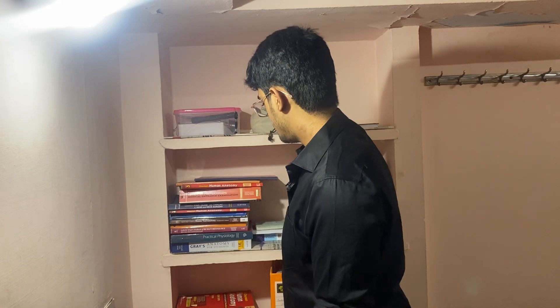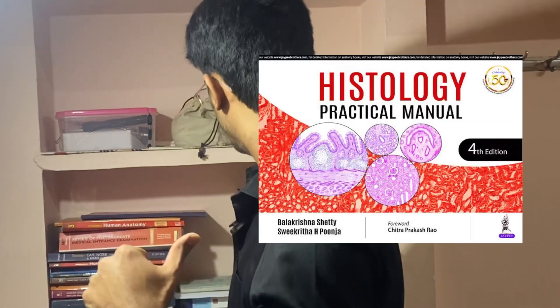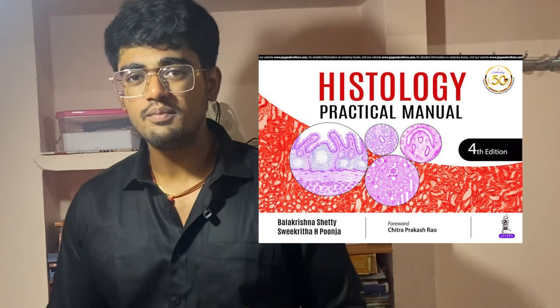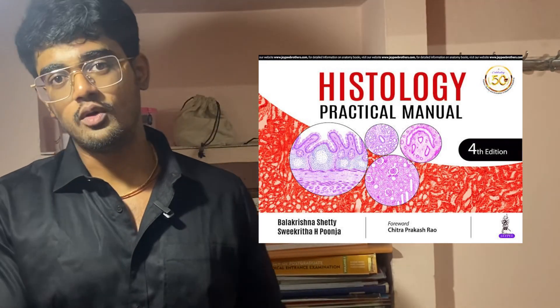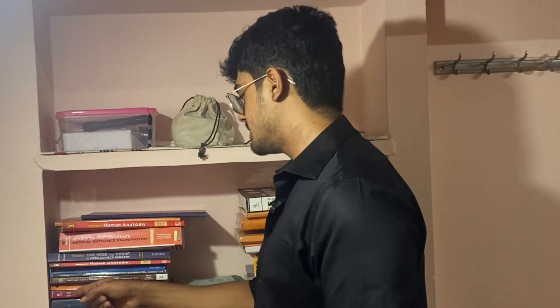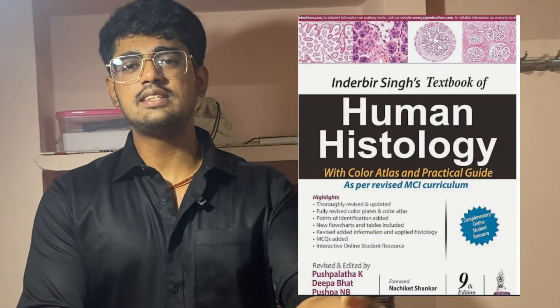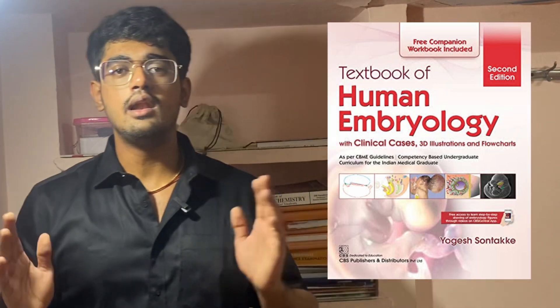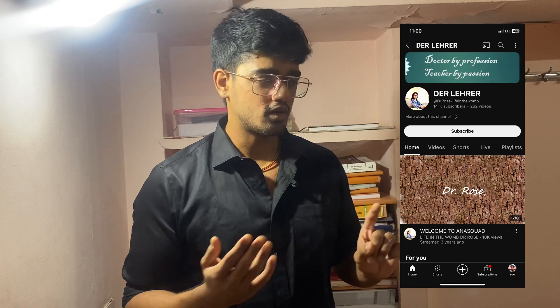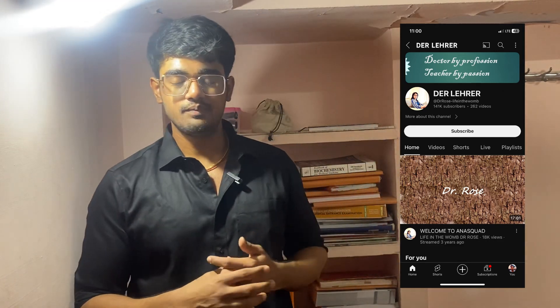There are also subjects like histology that you need a source for. There's a small concise book — everything basic you need to know for histology is in it. If you want more, you can also refer to Inderbir Singh's Textbook of Human Histology. Whenever I need extra content, that's where I refer to, but it's not necessary. For embryology, Yogesh Sondage is a phenomenal book — that single book made me fall in love with anatomy. Alongside it, I also watched YouTube videos by Dr. Rose, which was wonderful. So yeah, those are the sources.